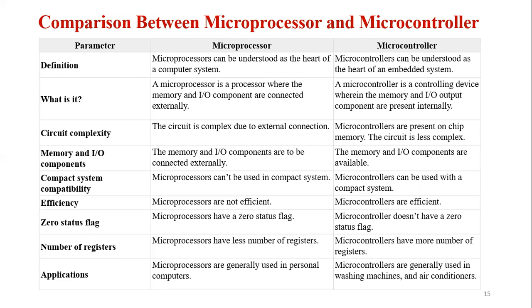Lastly, the microprocessor-based system is more flexible from a designing point of view. In terms of applications, microprocessors are generally used in personal computers, while microcontrollers are generally used in washing machines, air conditioners, etc. So that covers the comparison between microprocessors and microcontrollers.